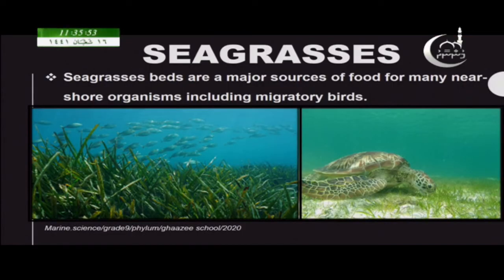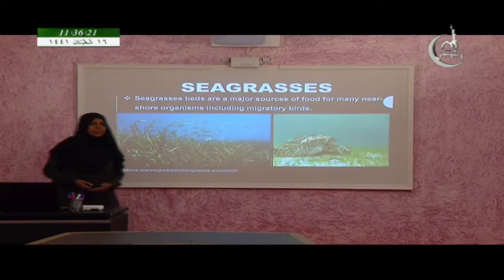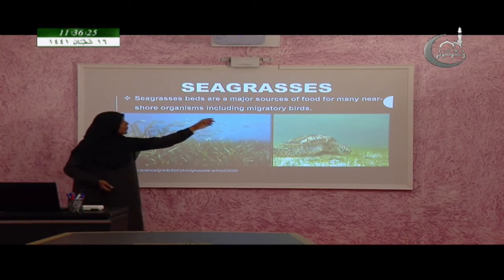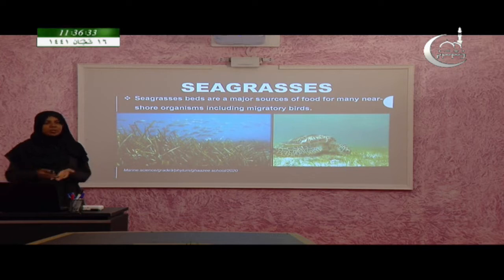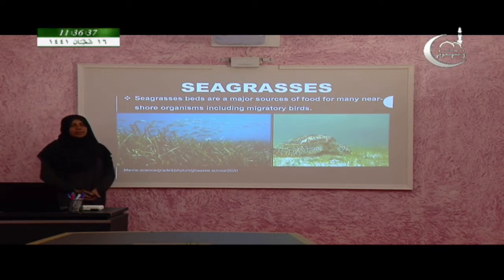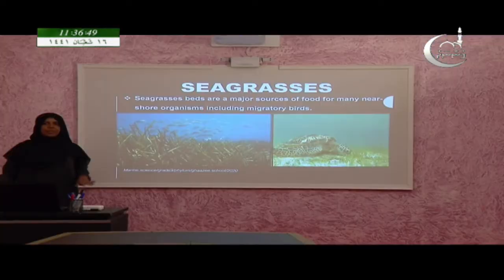Here you can see some seagrass beds. If a place is full of seagrass we call that area a seagrass bed. Like terrestrial grasslands, in the marine environment there are seagrass beds. These seagrass beds provide food for many marine organisms as well as some migratory birds, and for many nearshore organisms — those found in shore, lagoon, and reef areas. Seagrasses are found in shallow waters because they are photosynthetic and cannot live in the deep sea.